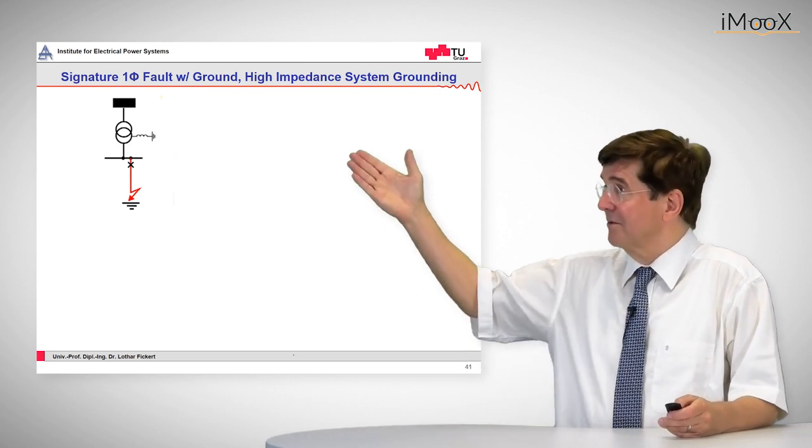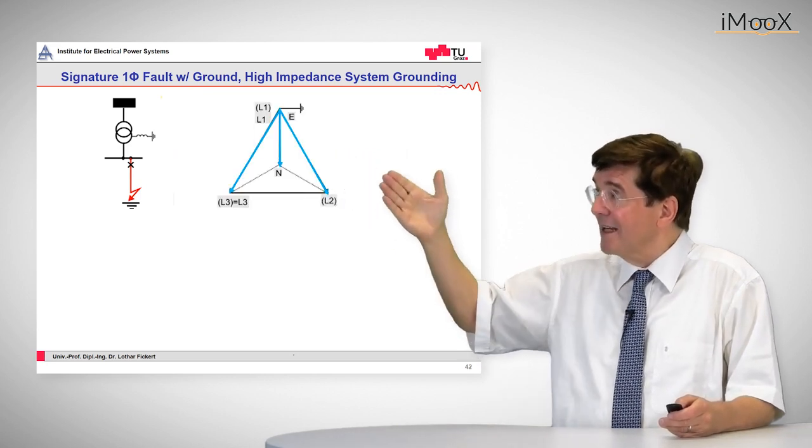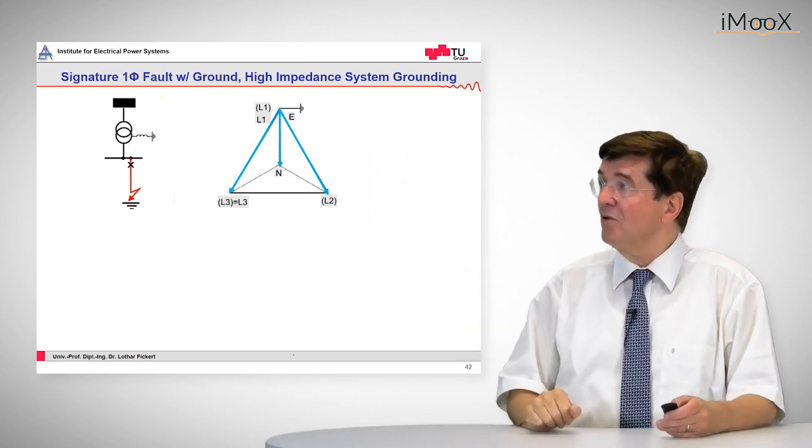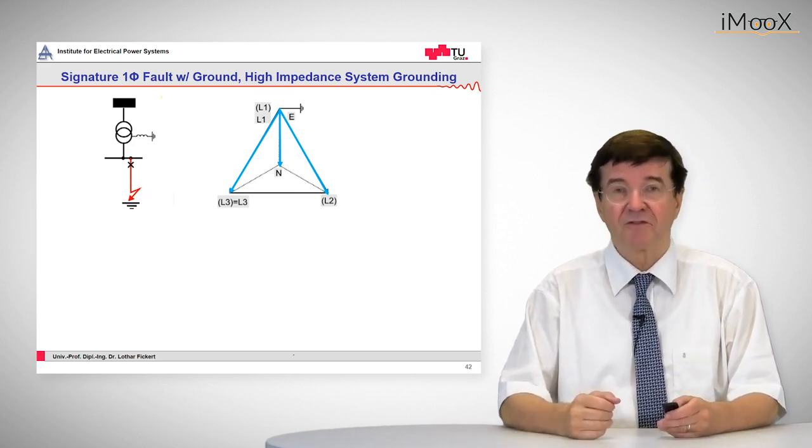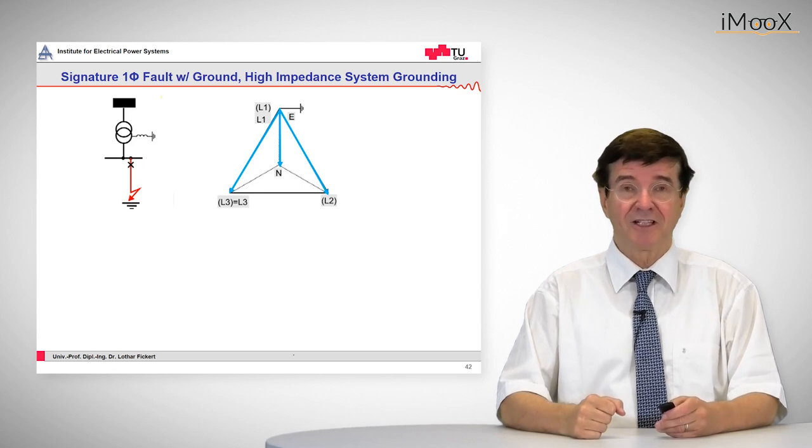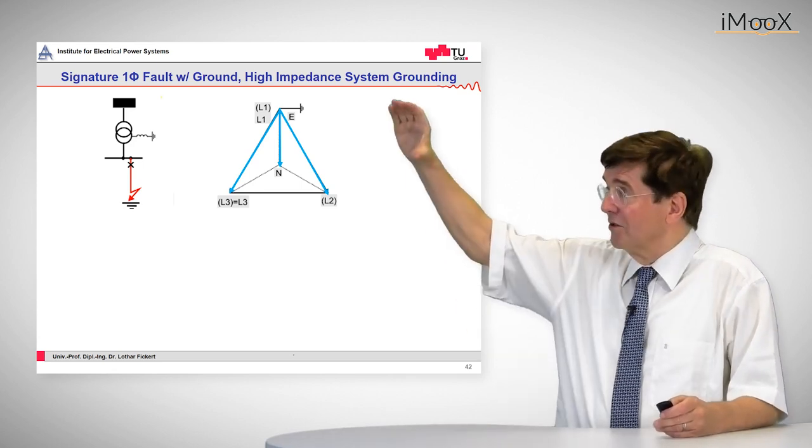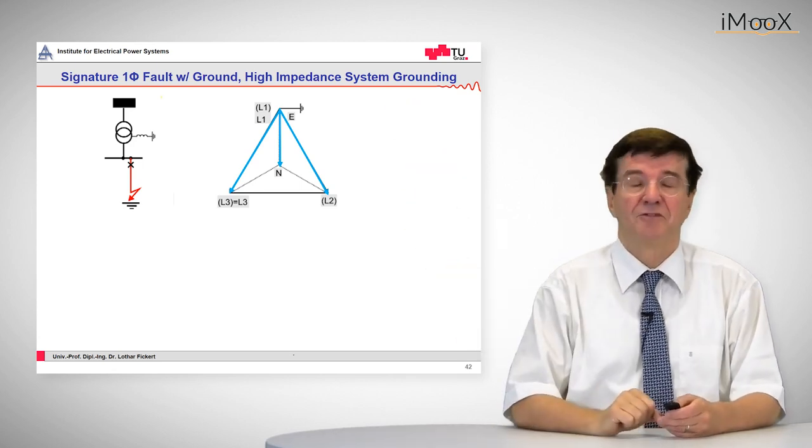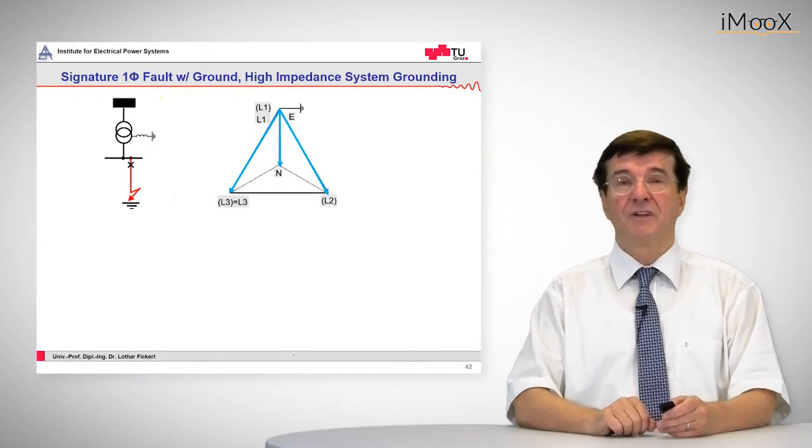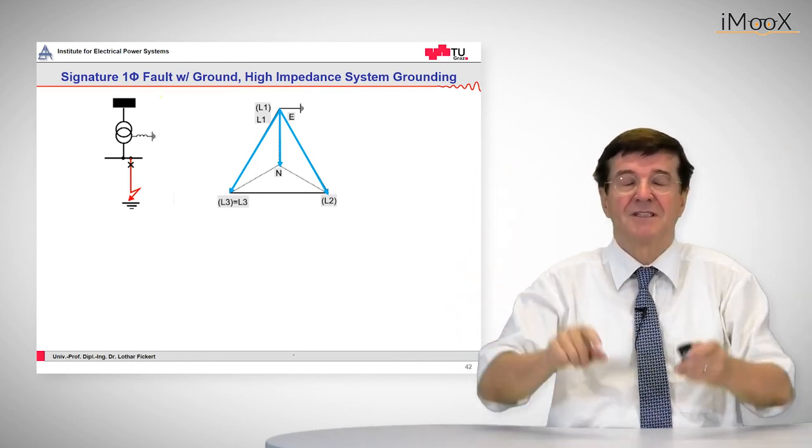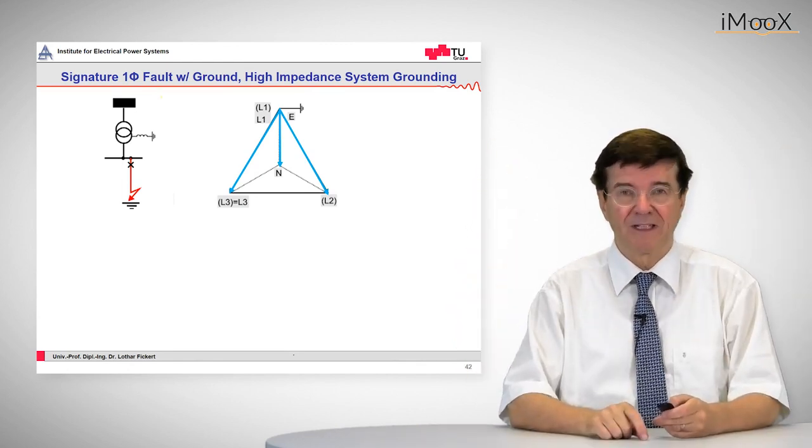Again we start with the appearance of the fault and now we can see that the whole triangle has not changed so much. That means the phase-to-phase voltage remains unchanged, but the whole triangle has moved away from neutral in the sense that L1 has become the neutral and the two other phase-to-ground voltages have risen by a factor of root 3.